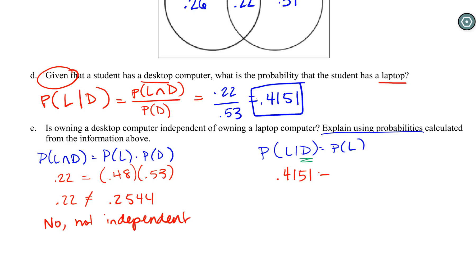These are not the same, so no, not independent. You could also do the same thing with our conditional: does 0.4151 equal 0.48? No, it does not. Here we actually have a little bit more information because we can say somebody who owns a desktop is actually less likely to own a laptop than the general public. There was a 48% chance; it goes down to a 42% chance when they have a desktop, so it's less likely to own both devices. Same thing you would write here: no, not independent.